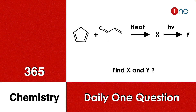Welcome to One Chemistry. This is the 365 Chemistry Series — one daily question for you. Cyclopentadiene is given; you are reacting it with an alpha-beta unsaturated ketone and heating it up. Then you are reacting the product with HMu. The product goes from X to Y, so you have two products to identify.